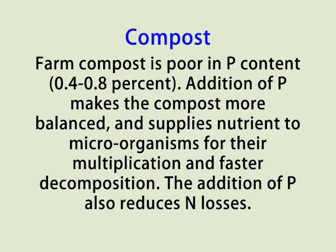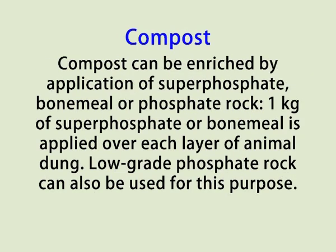Compost is poor in phosphorus content — about 0.4 to 0.8 percent. Addition of phosphorus fertilizer into the compost makes it more balanced and supplies nutrients to microorganisms for multiplication and faster decomposition. The addition of phosphorus reduces nitrogen losses. Compost can be enriched by application of superphosphate, bone meal, and phosphate rock. One kg of superphosphate or bone meal is applied over each layer of animal dung while preparing compost. Low-grade phosphate rock can also be used for this purpose.